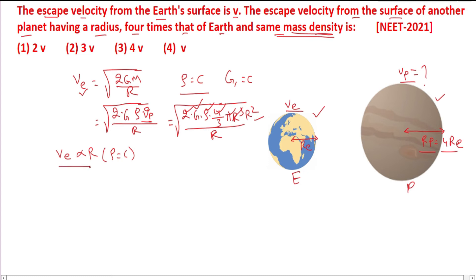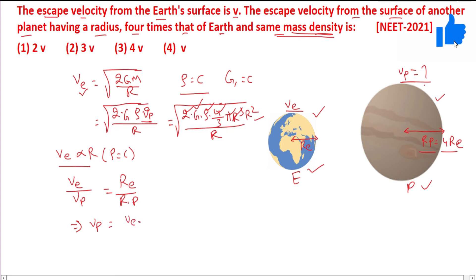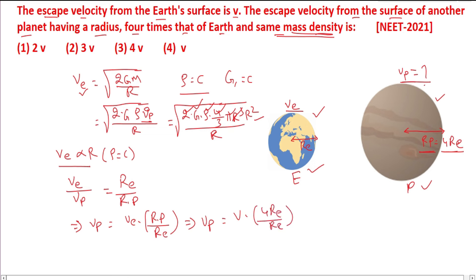Applying this logic to Earth and the planet: escape velocity on Earth divided by escape velocity on the planet equals radius of Earth divided by radius of the planet. Rearranging: Vp equals Ve into Rp by Re. Since Rp equals 4Re, this gives Vp equal to V into 4Re by Re. The Re cancels, so the escape velocity from the planet will be 4 times that of the escape velocity from Earth, that is 4V.